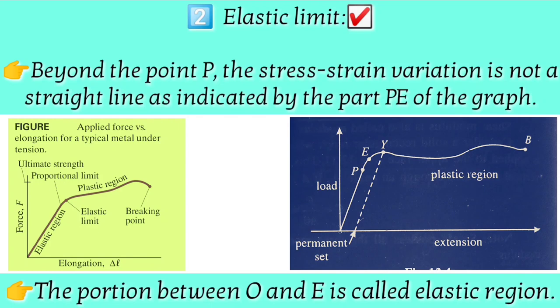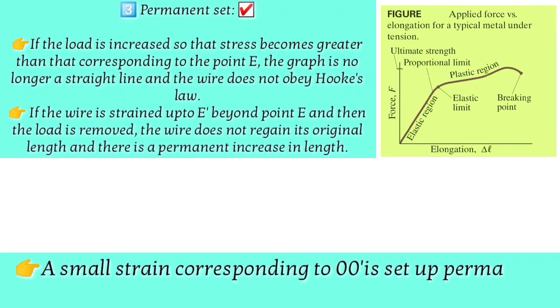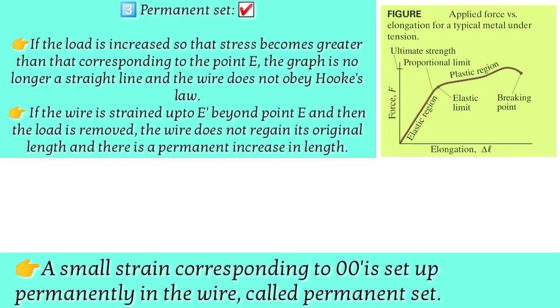When you remove the force within the proportionality limit, the body recovers completely. However, between the proportionality limit and the elastic limit, removing the force does not give 100% recovery — the body has a permanent set, meaning the length is permanently changed. The elastic limit is the point after which the material is no longer elastic but becomes plastic. If applied stress is below the proportionality limit, the body recovers 100%.